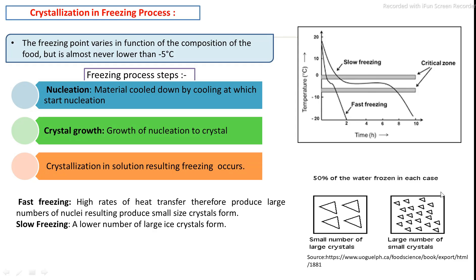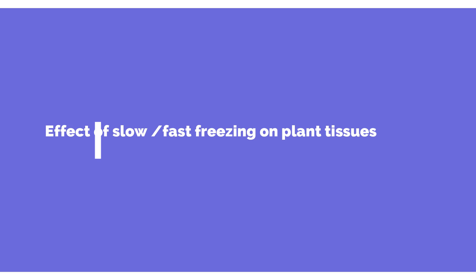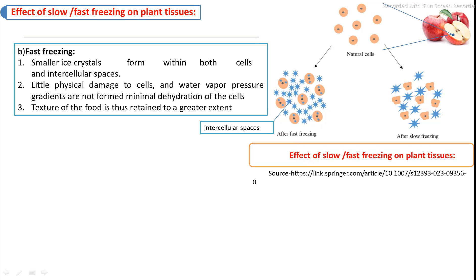Crystallization is very important and depends totally on the freezing time-temperature combination. Comparing fast and slow freezing effects on food: fruits contain internal cells, and both inside and outside the cells contain moisture. In fast freezing, more nucleation sites form both inside and outside the cells, resulting in more but smaller ice crystals, which do not damage the quality of the cells.